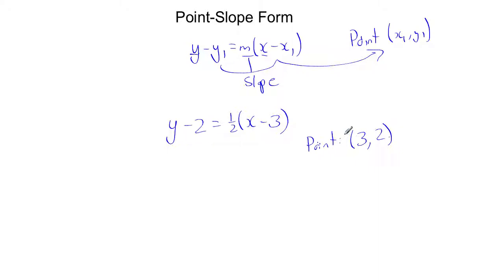Well, what if the graph doesn't go through the y-axis at an integer value, or a friendly point, or is really, really, really high, like a million? In those cases, it's going to be very helpful for us to have some other point than just the y-intercept.